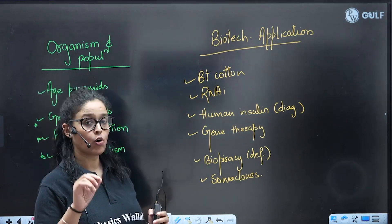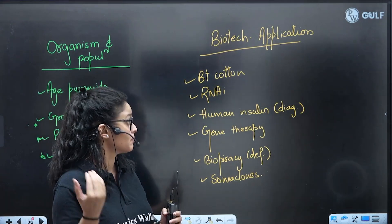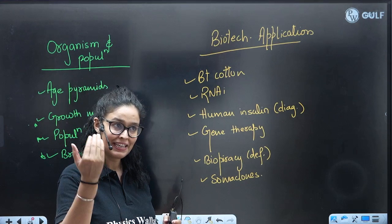Biotechnological Applications: Bt cotton, RNA interference - you will find a lot of questions. Human insulin diagram and this Humulin.